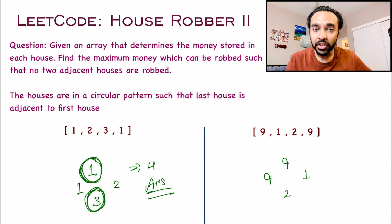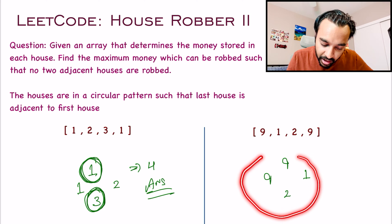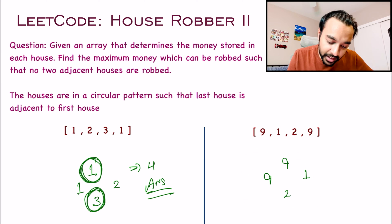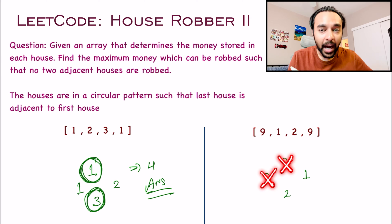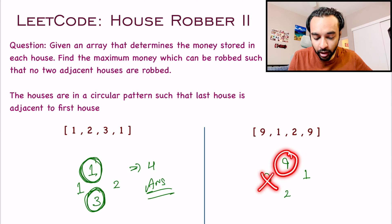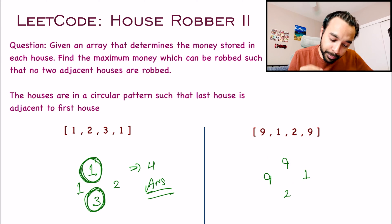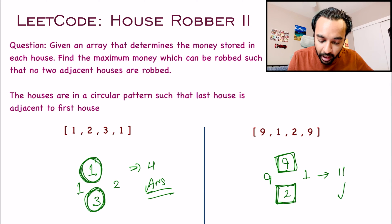But in this problem statement, since they are arranged in a circular manner, you can see that both of these 9s come adjacent to each other. So if you choose this one, then you cannot choose any of these 9s. So for this particular test case, you can achieve a maximum loot when you rob the house with money 9 and this house with money 2. So 11 will be your answer in this case.